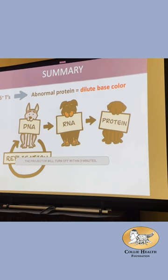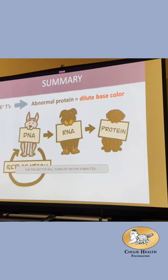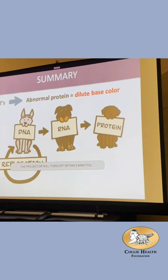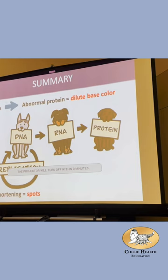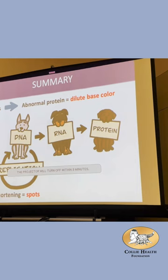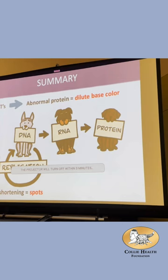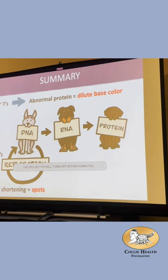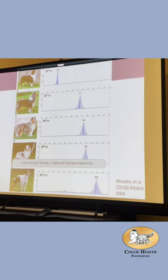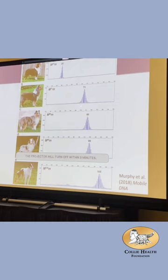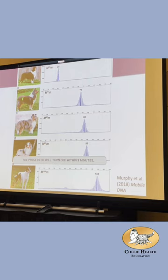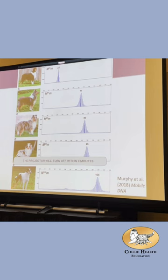In summary: our dilute base coat starts happening once we reach 66 T's — we start splicing wrong, making bad protein — that's your dilute base color. Our spots are caused by cell replication errors starting at about 75 T's, where the cell starts cutting the T-tail back to make it shorter — and that's when you start getting spots. It all comes down to the T-tail length of that insertion in SILV, but through two entirely different mechanisms. That's really why we have so much variation with merle.